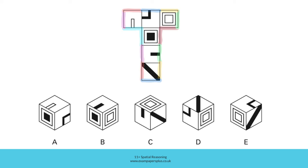In option B, we can see these two faces next to one another. If you folded the net so that this edge met with this one, and this face and this face were on these two sides, then it would be this face which would be uppermost here, and not this one. That means that option B is incorrect.